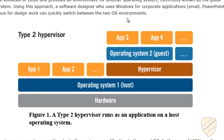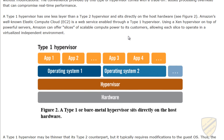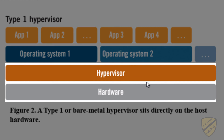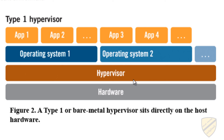Now let's look at the type 1 hypervisor. With a type 1, you can see that there is no extra layer of a host operating system — there is no host OS at all. This is called 'bare metal' because the hypervisor sits directly on the host hardware. It's usually a very lightweight install — a small, lightweight piece of software. The great advantage is you don't have the overhead of that extra layer, and there's less code and fewer security concerns.